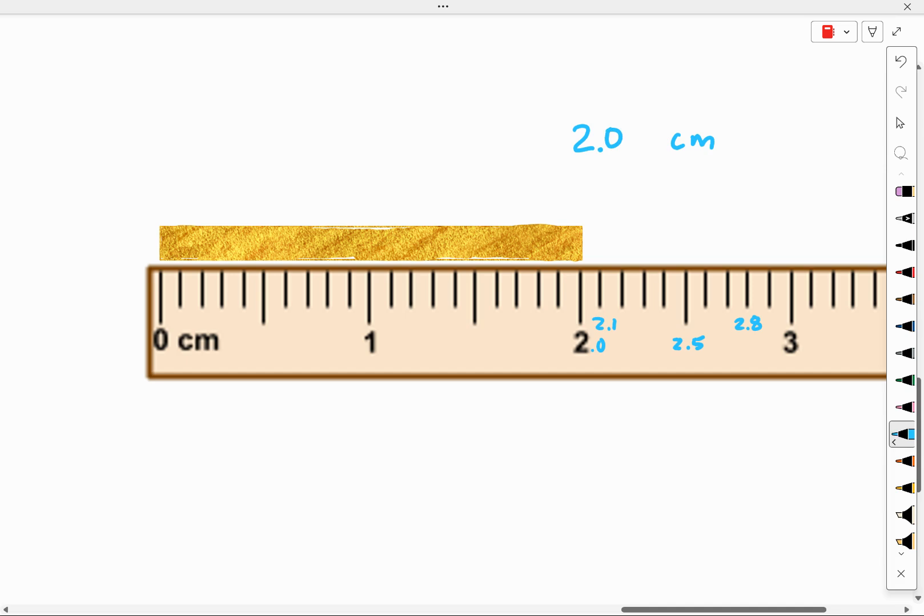Now, recall that our other measurements all gave us one more digit to the hundredths place. That we generally want to estimate one digit beyond what we can read off the measuring device. So again, I ask, what number should I put here if it's lined up right on the two?